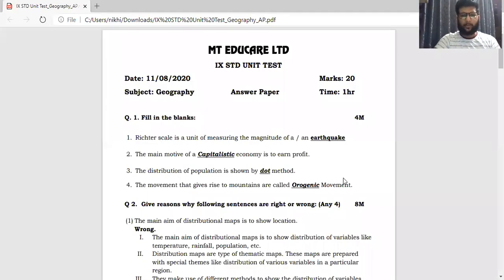Hello students! Today we are going to be discussing Geography's model answer. The test which was being asked on 11th of August. This is the answer for the solution and the key to it. This question paper was for the 21 test and the duration was for 1 hour. The chapters covered were chapter number 1, chapter number 2 and chapter number 3.